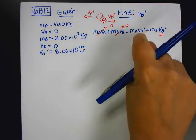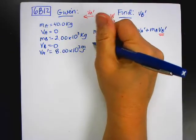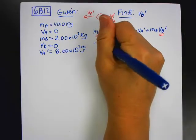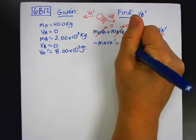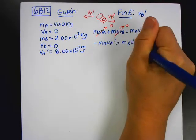So what I'm going to do first is I'm going to move this to the other side. So I'm going to say negative m_A v_A prime is equal to m_B v_B prime.